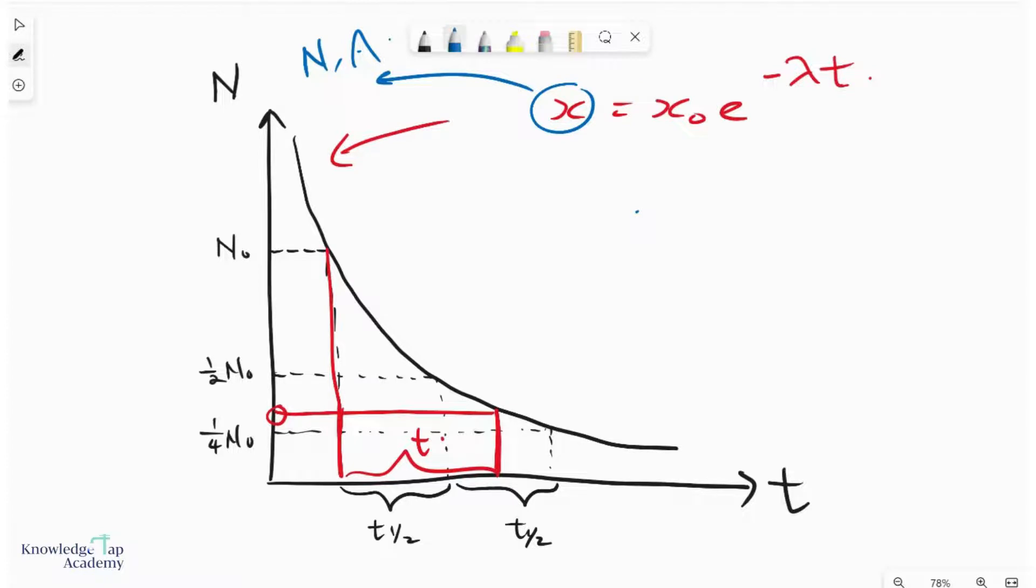Other things that it could represent would be the mass of the sample remaining or something called count rate. But most of the time, it will be one of these two. And so in this case, since we are looking in terms of N, we can think of it as N equals to N₀e^(-λt).